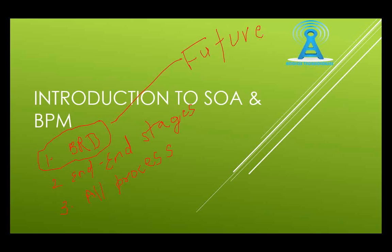Let's take the second point — end-to-end stages. If I document end-to-end stages for the administrative department, is it going to give me the complete business process model? Points 2 and 3 don't differ much: one talks about the process, another about the final state after the process is executed. If I combine all the processes and stages, is it going to tell me whether the business is successful, running at a loss, how many people are there, how many people would be impacted by a given situation? It's not.